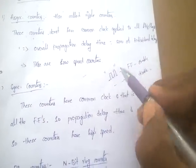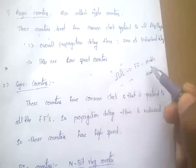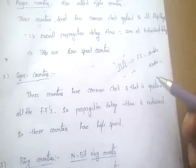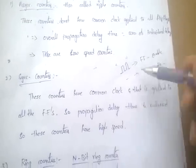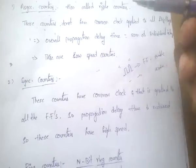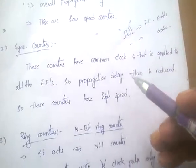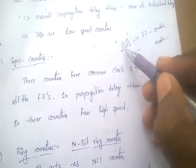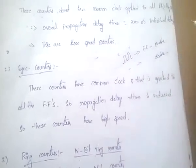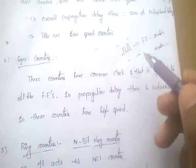In an asynchronous counter, applying a clock to the first flip-flop produces output with some delay; the second and third flip-flops also each have their own delay. So the total propagation delay is the sum of these individual delays, increasing overall time and reducing speed. In a synchronous counter, the common clock enables all flip-flops simultaneously, increasing speed.